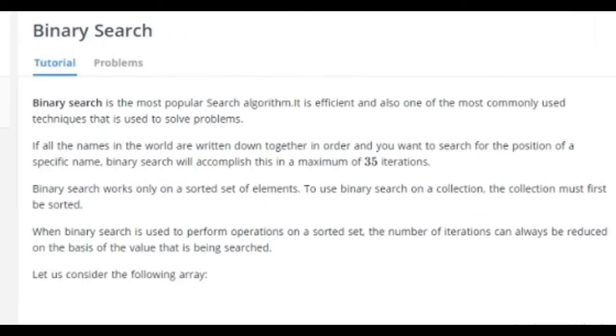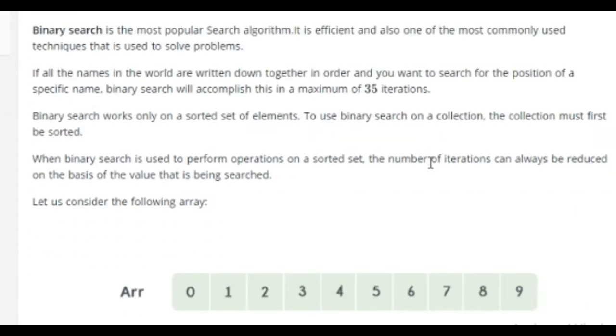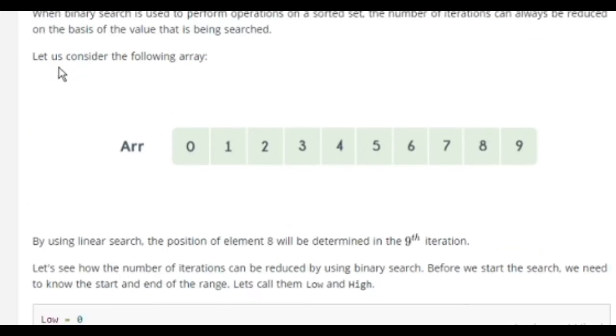Let's go through it and deep dive in. Binary search is the most popular search algorithm. If all the names and words are written down together in order and you want to search for a position of a specific name, binary search will accomplish this in a maximum of 35 iterations. Binary search works only on sorted sets of elements. Let us consider the following array with 10 elements from indexes 0 to 9.